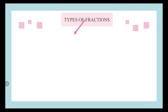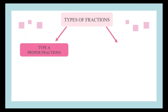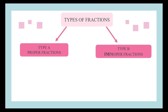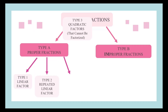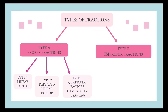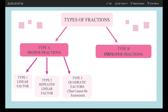Let's look at the types of fractions that we have learned before. There are two types of fractions: proper fractions and improper fractions. For proper fractions, we have three types — either a linear factor, a repeated linear factor, or quadratic factors that cannot be factorized.